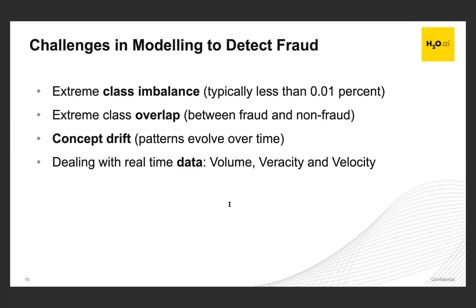The second challenge is class overlap — fraudulent transactions are designed to fake our mental model of what distinguishes fraud from non-fraud. They're done by smart people specifically to look like normal transactions, so we barely see a difference between fraudulent and non-fraudulent transactions.